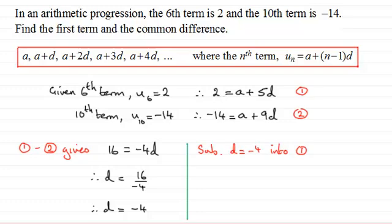And if we do that, then we've got that 2 equals a plus 5 times the common difference, which we now know is -4. And so therefore we've got 2 equals a minus 20, and if we add 20 to both sides, we end up with that first term a equaling 2 plus 20, which is 22.